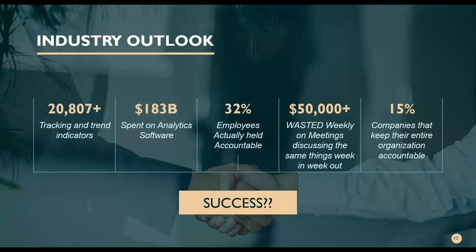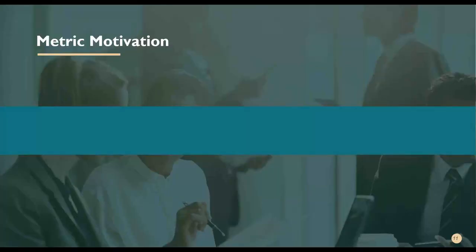When you have accountability from top to bottom, that makes the organization super powerful — because the communication is there. The leader at the very top can see all the way to the lowest level. Upper management often doesn't know everything that happens at the lowest level because they're too busy thinking strategically. But what if you had a way to see all that? That is powerful. Let's talk about metric motivation.